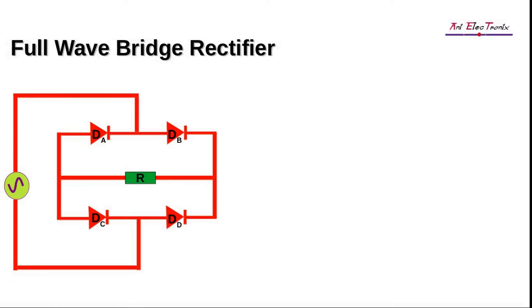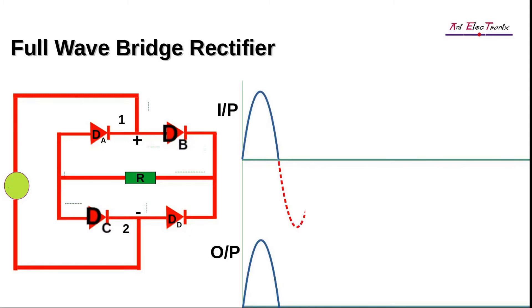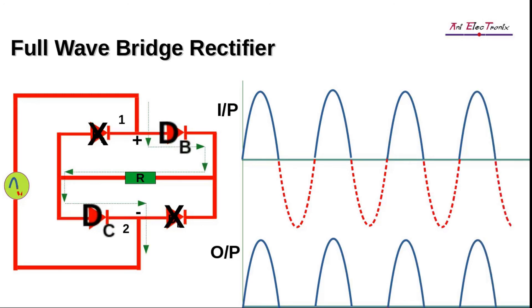We can divide the circuit into two sections to better understand its operation. Let's apply an AC voltage to the input. Point 1 will be at positive potential and point 2 at negative potential whenever the positive half cycle appears. Therefore, diodes DB and DC will be in forward bias and start conducting. The diodes DD and DA will be in reverse bias mode and not conduct.